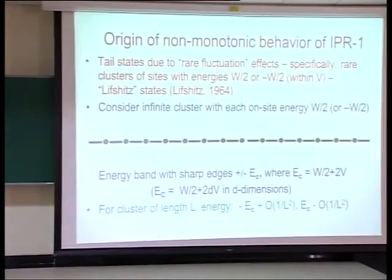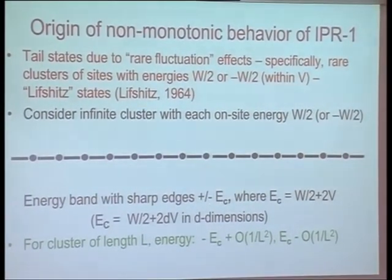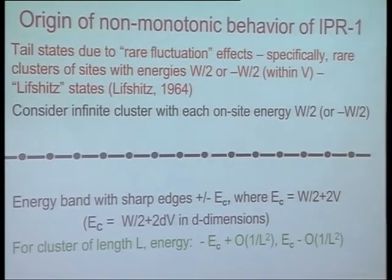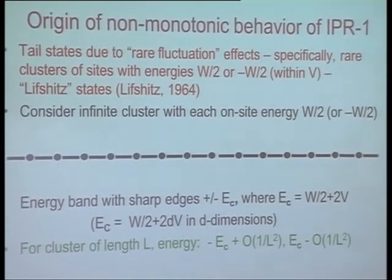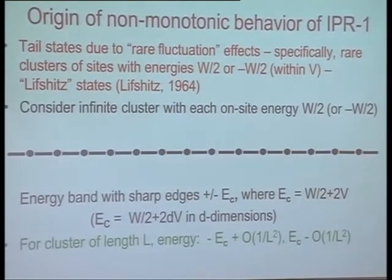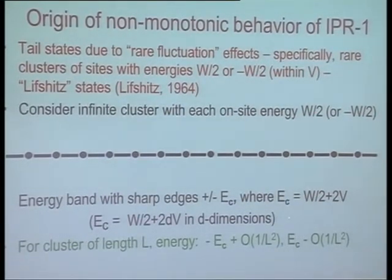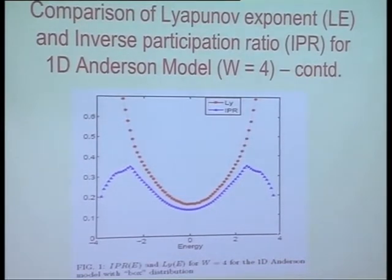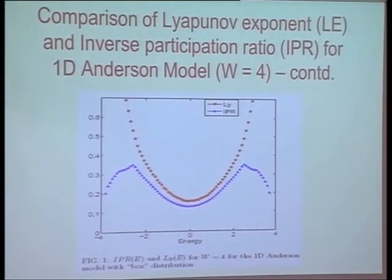When you look at the one-dimensional case, where there are only localized states, the energy band has sharp edges given by W/2 + 2V. You can make a particle-in-a-box argument to say the energy for finite length L is going to be Ec ± order 1/L². So as a function of energy, the actual band edge is at ±4, which is W/2 = 2 plus 2 gives 4. The states near the edge are coming from clusters that are very long — the band edge gets shorter and shorter for what we can actually catch.